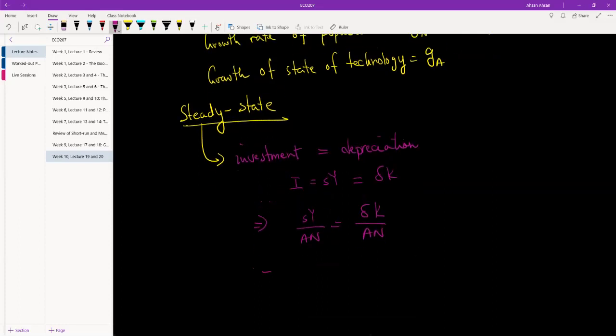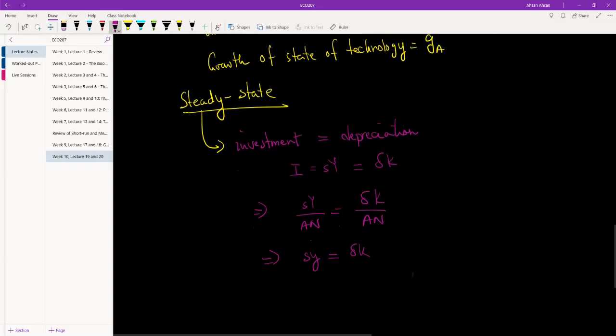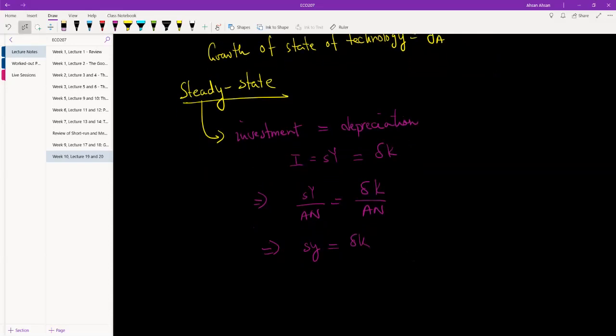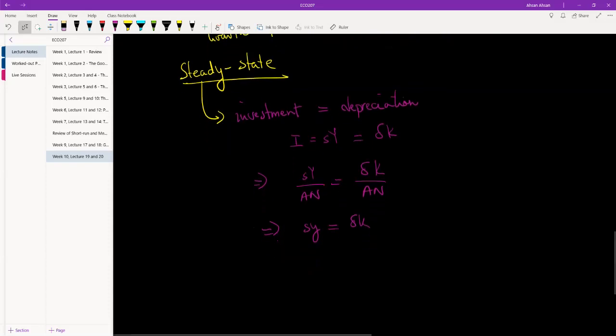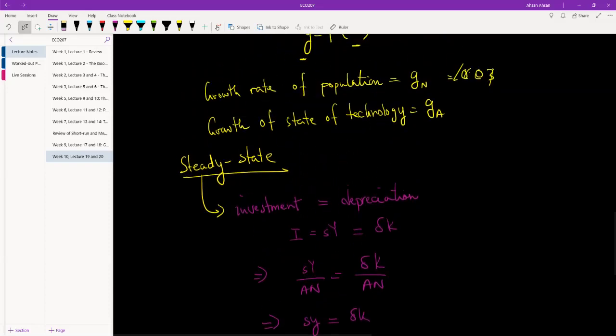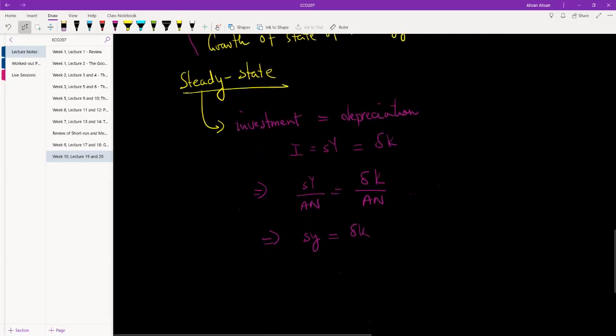Now what we end up with is sy equals to, we had this in the previous chapter, the only difference is now this is not per worker, this is per effective worker. I've said that plenty of times already. But the difference is we have this too to think about now: population growth and technology growth.